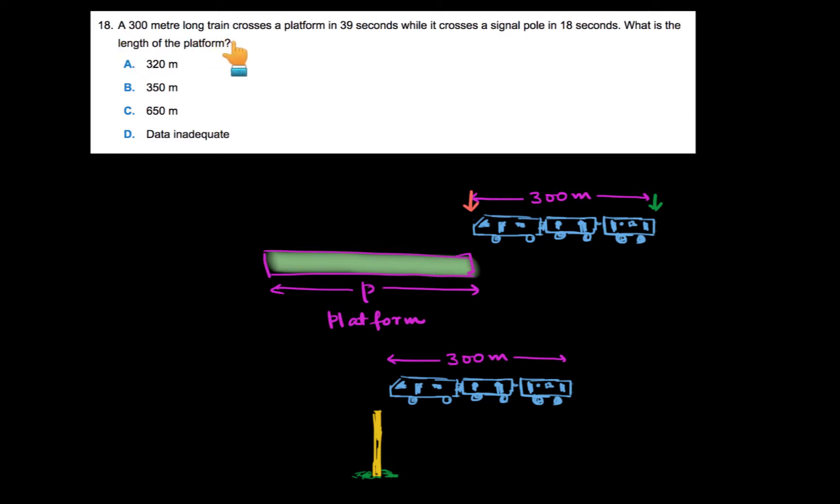A 300 meter long train crosses a platform in 39 seconds while it crosses a signal pole in 18 seconds. What is the length of the platform? Let's say that the length of the platform is P and we need to find this value P.